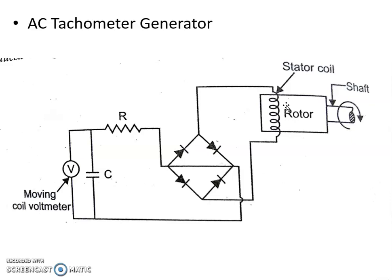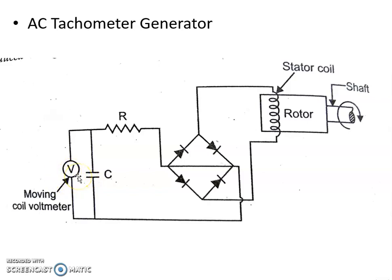The EMF induced in the stationary stator coil is an alternating EMF. The alternating EMF developed across the stator coil is converted into DC voltage by means of a bridge rectifier. The ripple content present in the DC voltage is removed by a capacitor filter, and the converted DC voltage is measured with a moving coil voltmeter. The voltage shown by the voltmeter is directly proportional to the angular velocity of the shaft — as velocity increases, more voltage is induced across the stator coil.